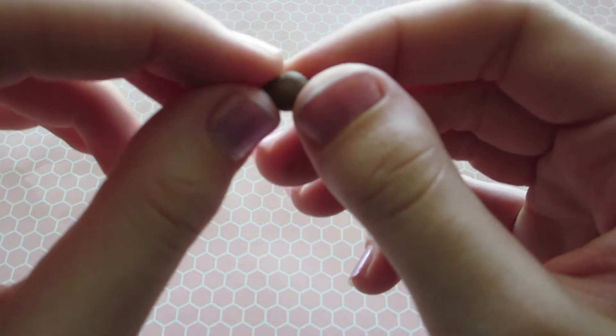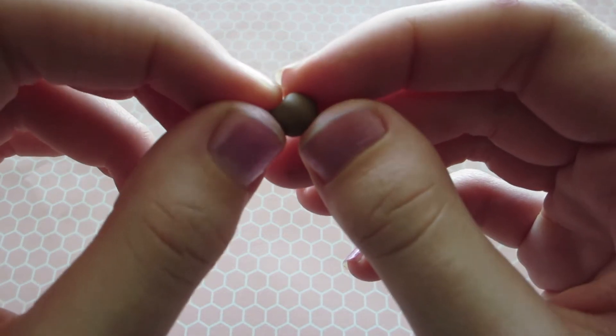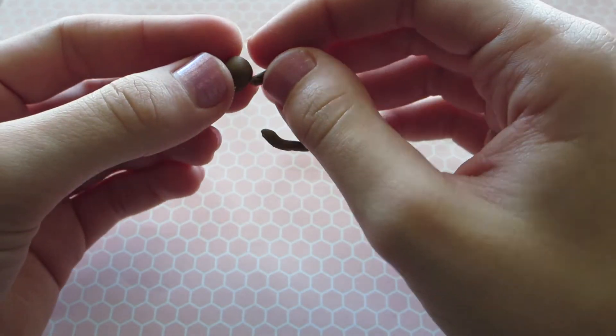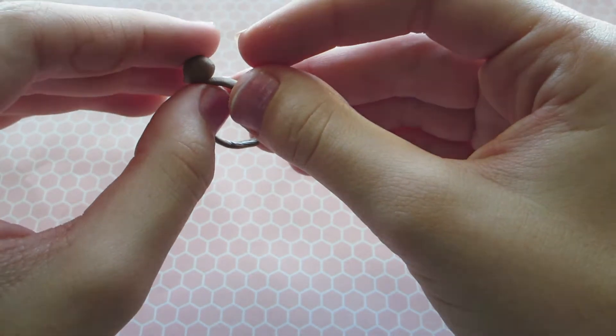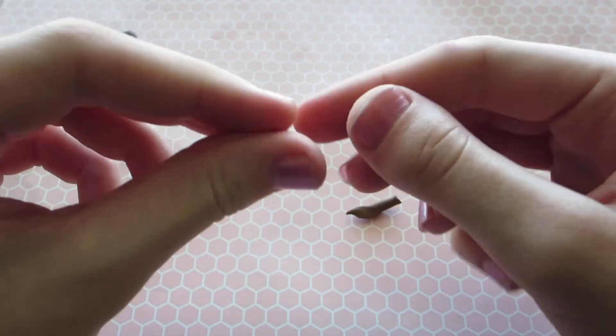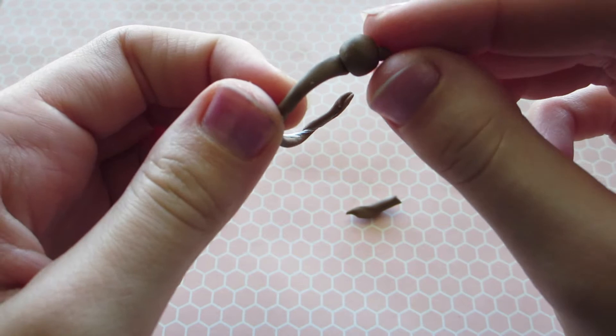Take a brown ball of clay and pinch one of the sides to make a nose for the reindeer's head, then attach it to your ring base. Take some more brown clay and make two little triangles and attach them to the head to make the ears.